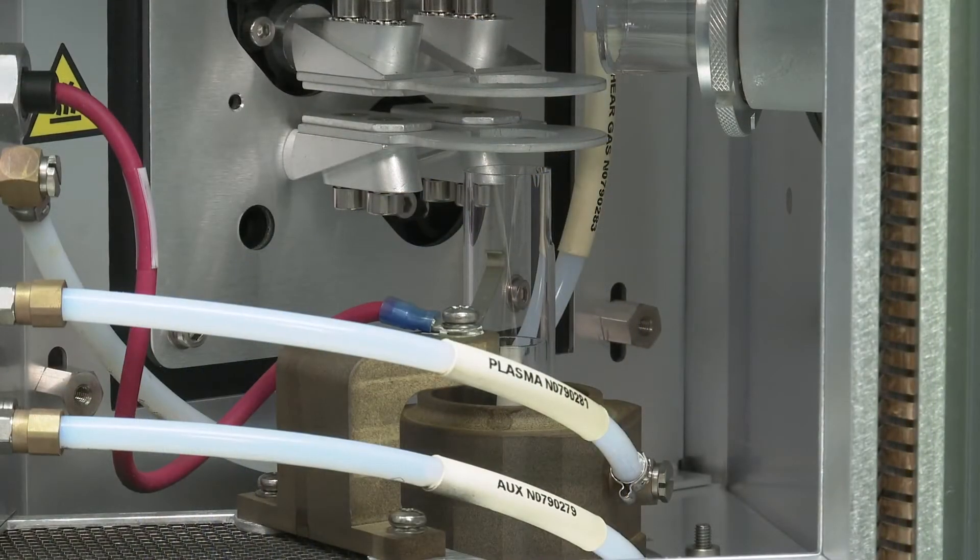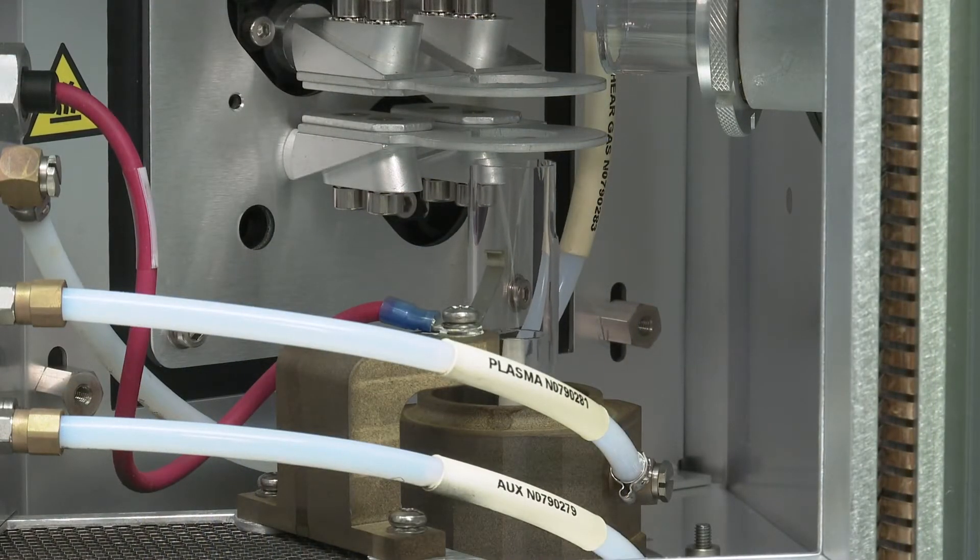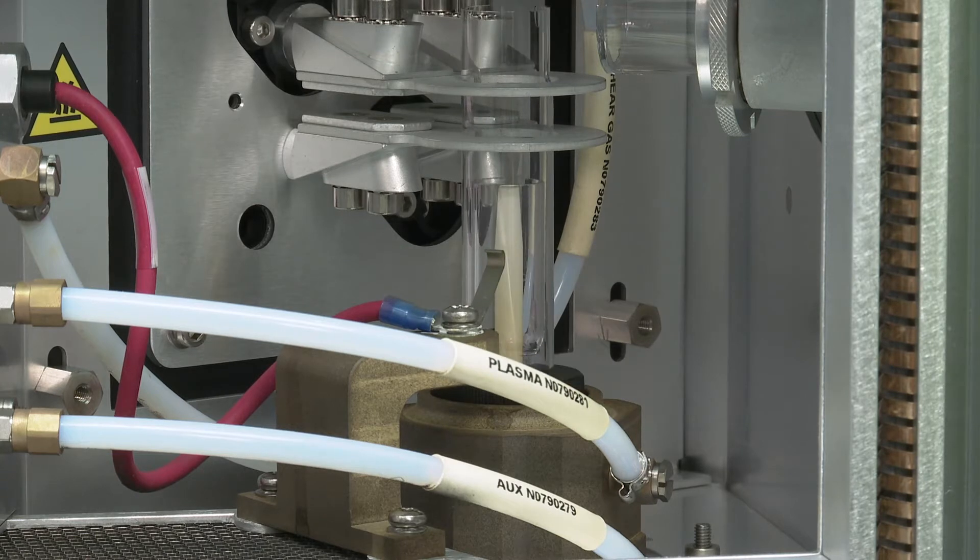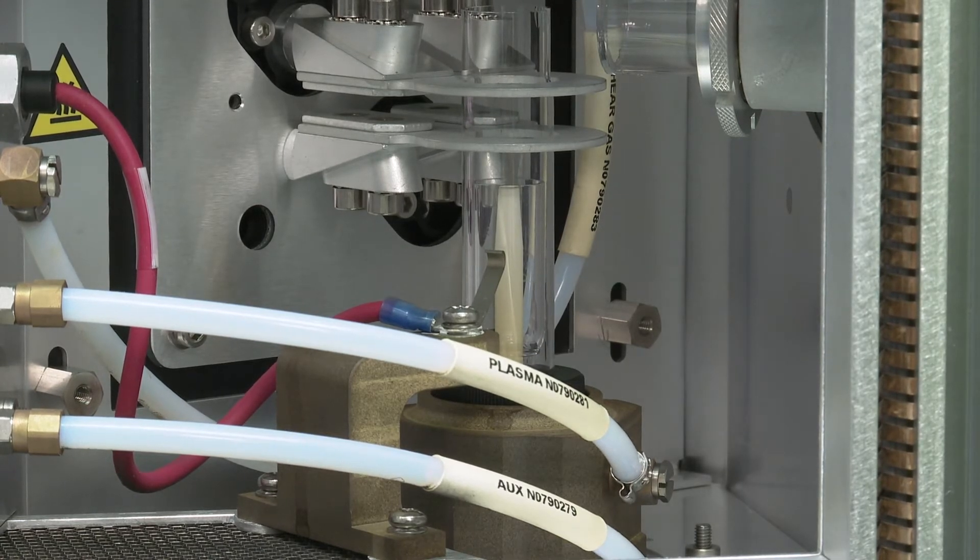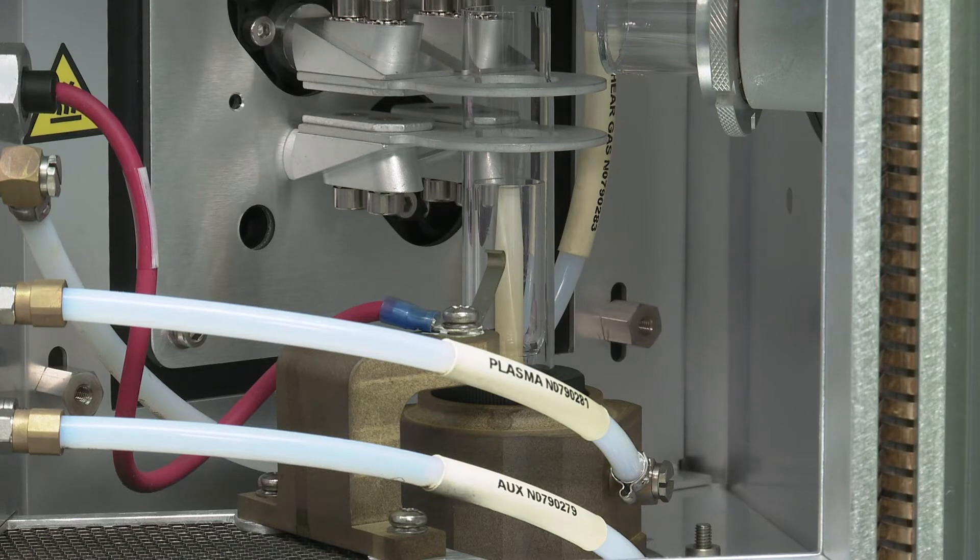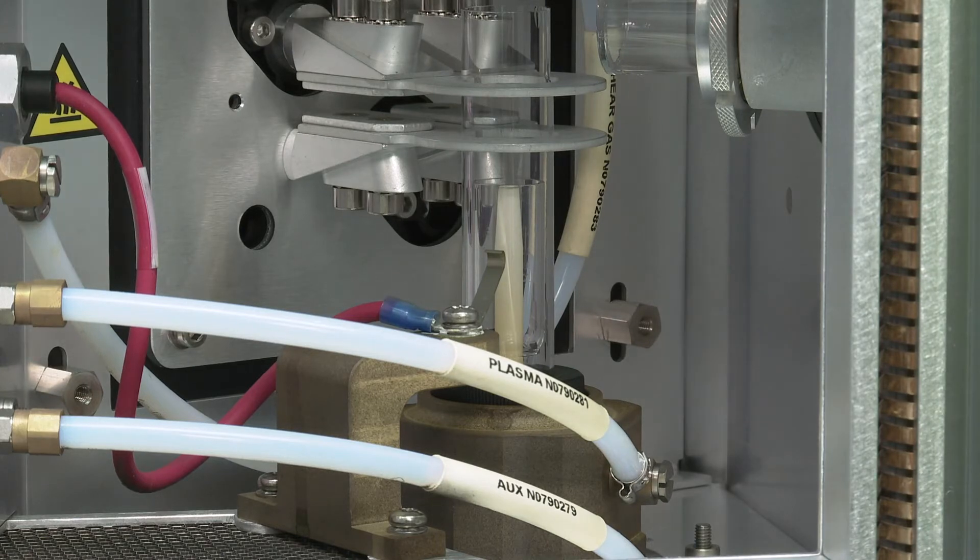While pushing the torch module slowly upward into the torch mount, be careful to keep the torch glassware centered in the induction coil. Continue to push the torch module upward until it's fully seated.